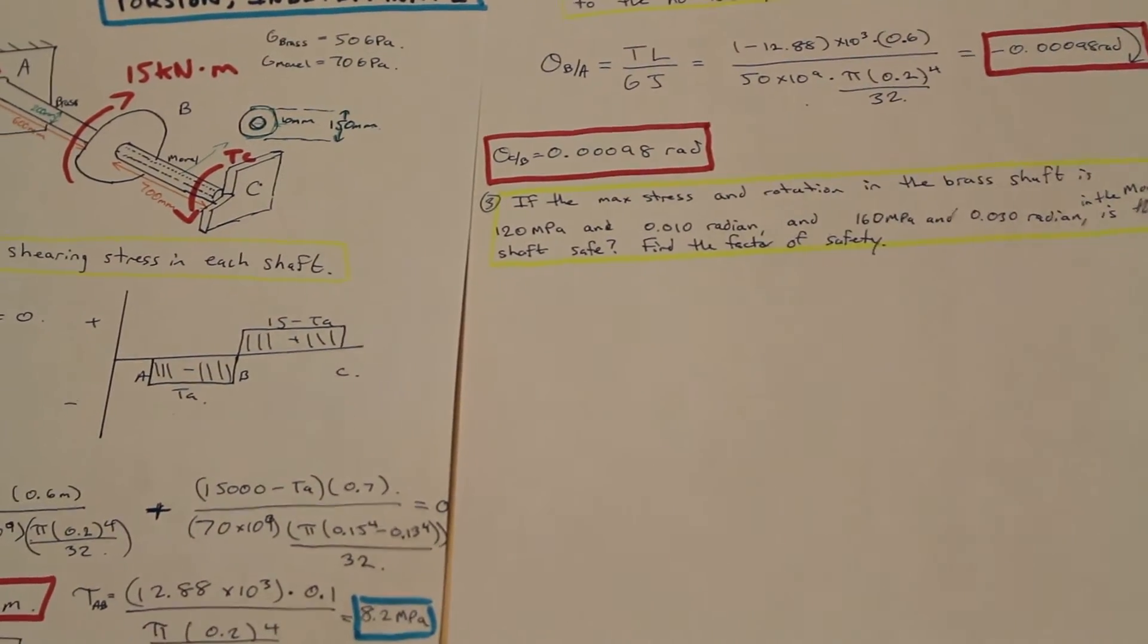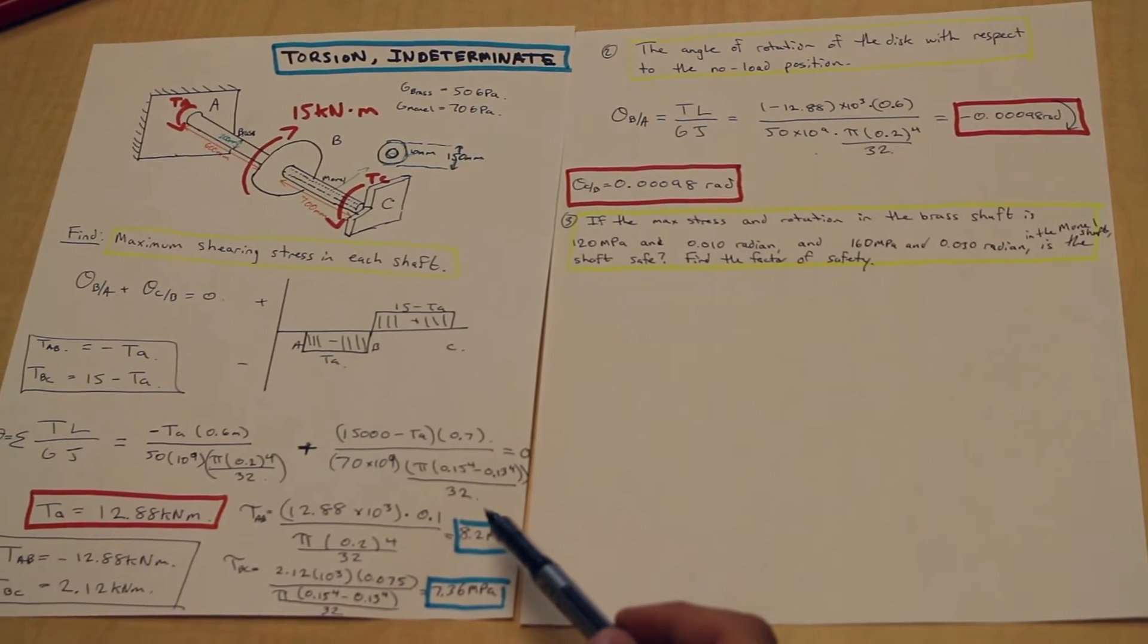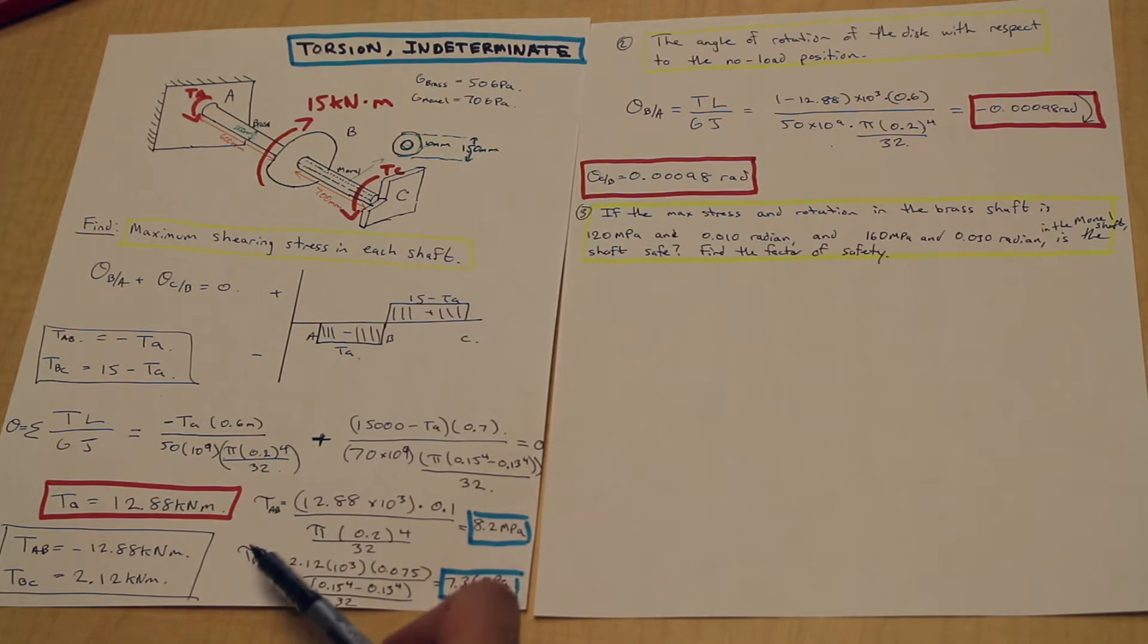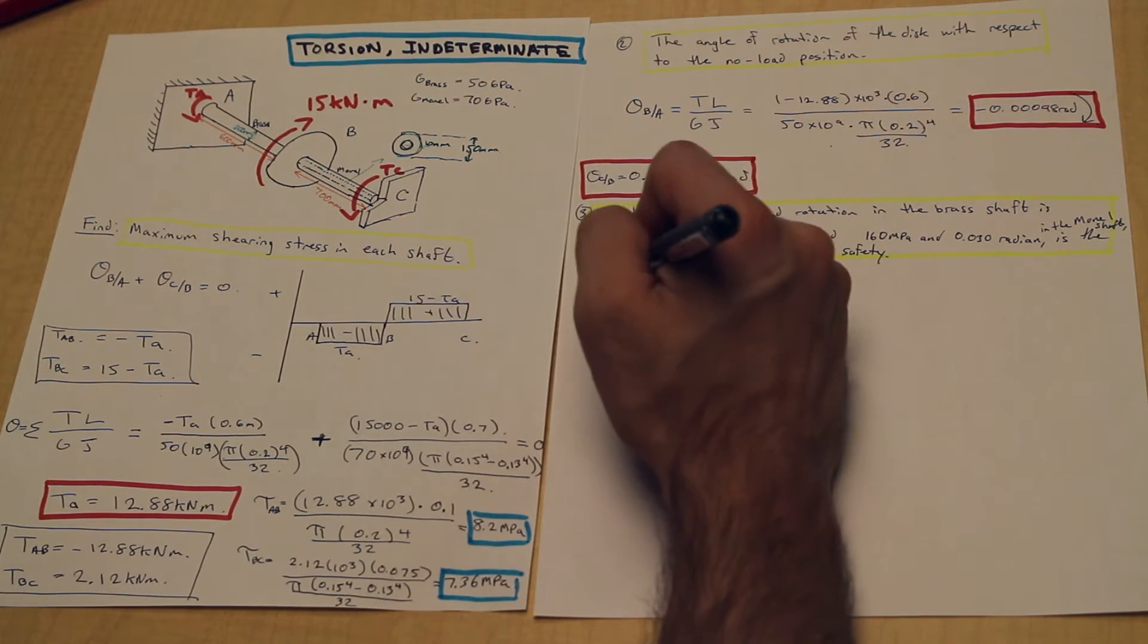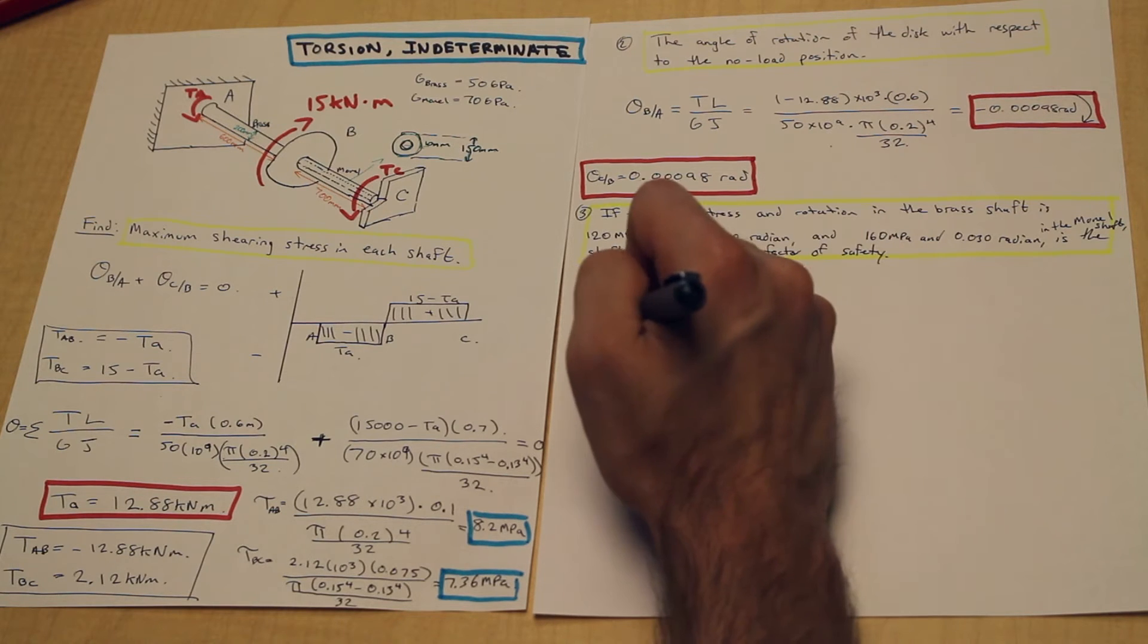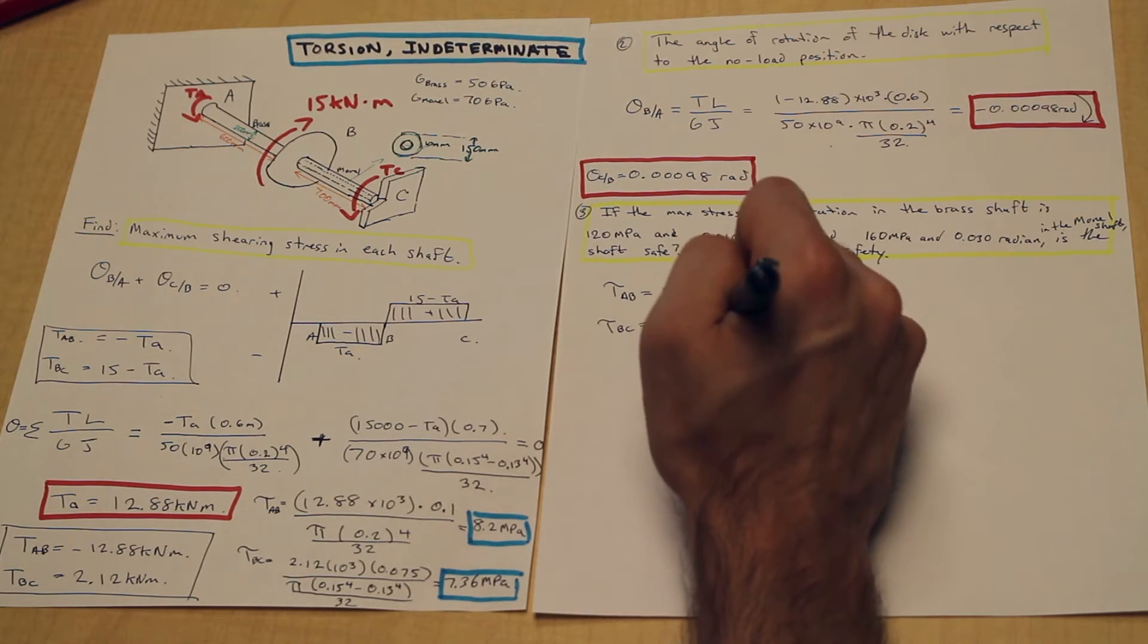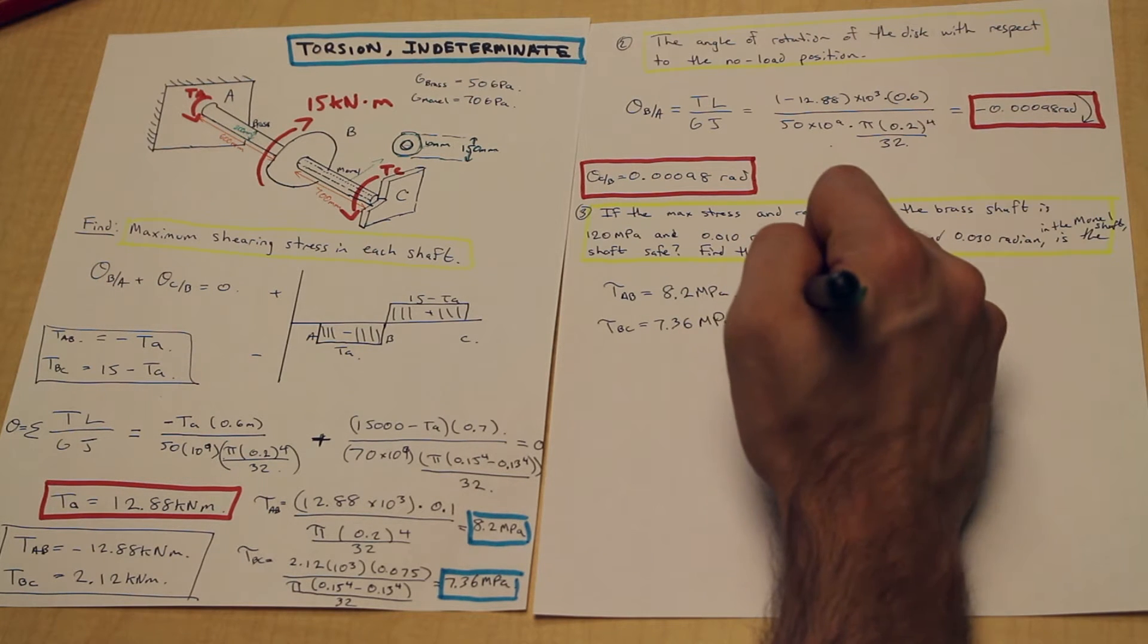What we're going to do is refer back to the first part of the question and look at the shear stresses in shaft AB and shaft BC. We'll take those over here. Tau AB we found to be 8.2 MPa. Tau BC we found to be 7.36 MPa.